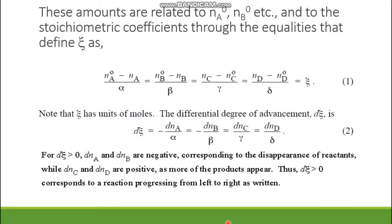Mathematically, if N_A0 is the initial amount of reactant A and N_A is the amount after some time t, then the amount of A consumed is N_A0 minus N_A. When this difference is divided by the stoichiometric coefficient of A, the result equals Xi. Similarly, the initial amount of B minus the current amount of B, divided by the stoichiometric coefficient of B, also equals Xi — the degree of advancement.